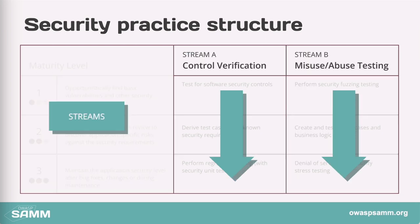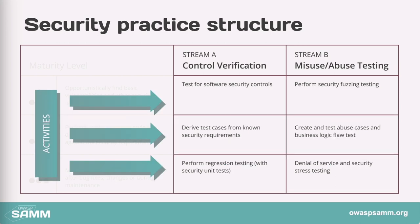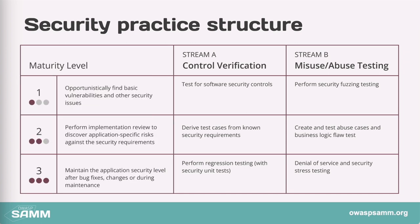For each practice we have two streams, each representing a logically coherent topic within the security practice. Stream A in this case would be the happy flow of events — think of positive tests. Stream B would be the attacker mindset — think of negative tests. Each stream provides a security activity per maturity level that represents the most fine-grained security task. Let's have a look at the full picture for this security practice.